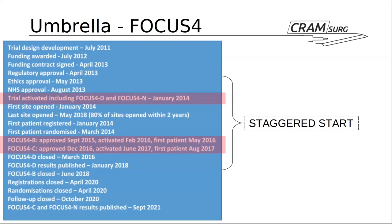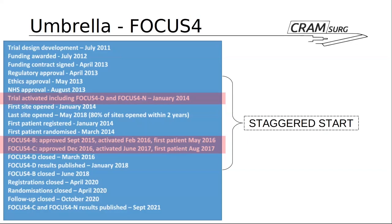Looking at the timeline of Focus 4, the first arms activated were Focus 4D and Focus 4N — the all-wild-type and non-stratified arms on the right side of the screen. Other arms started later and closed at different times, published in separate papers. You can plan for a variety of treatment strategies in a variety of disease subsets, all within one protocol. It expedites the assessment of new drugs and is more engaging for recruitment — patients tend to engage more in trials likely to allocate them to a current treatment.